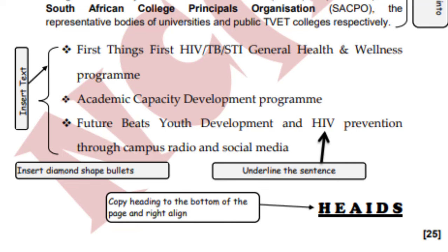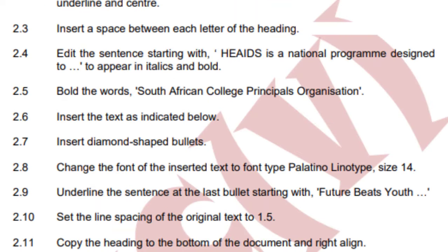2.8 says change the font of the inserted text to font type Palatino Linotype size 14. I'm going to do that once the text has been typed. Then underline the sentence at the last bullet starting with 'Future Beads Youth.' 2.8 also says change the font type to Palatino Linotype size 14. I will also have to do that one.